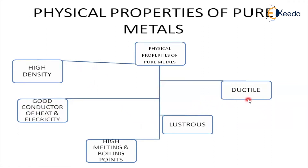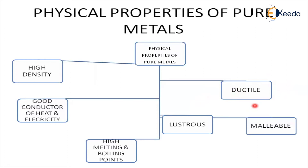Pure metals are also ductile in nature. Ductility is a measure of a material's ability to undergo significant plastic deformation. And the next property is malleable — malleable means it is able to be hammered or pressed into shape without breaking or cracking. These are the various properties of pure metals.